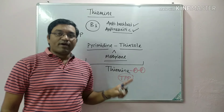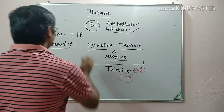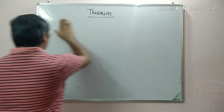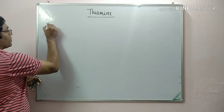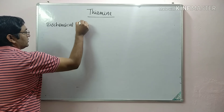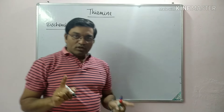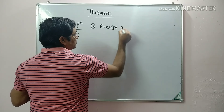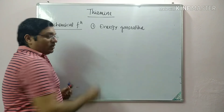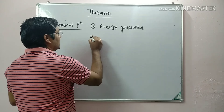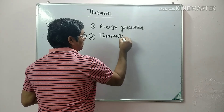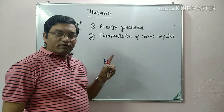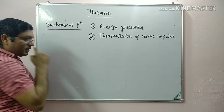Thiamine Pyrophosphate is responsible for various biochemical reactions. The biochemical functions of thiamine are due to this active coenzyme form. Thiamine has two important roles in our body: the first is energy generation, and the second is transmission of nerve impulses.